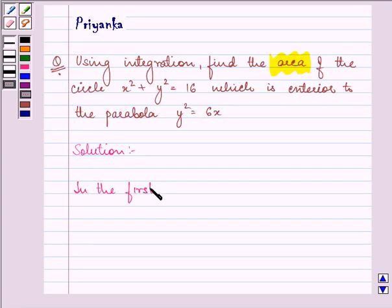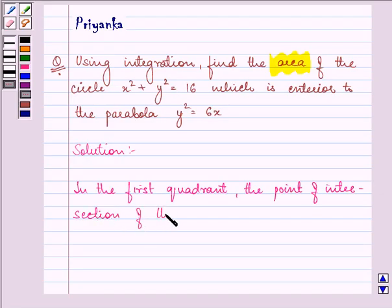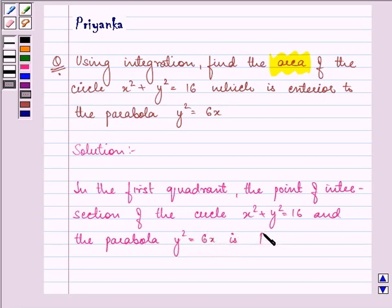In the first quadrant, the point of intersection of the circle x² + y² = 16 and the parabola y² = 6x is point P which is (2, 2√2).